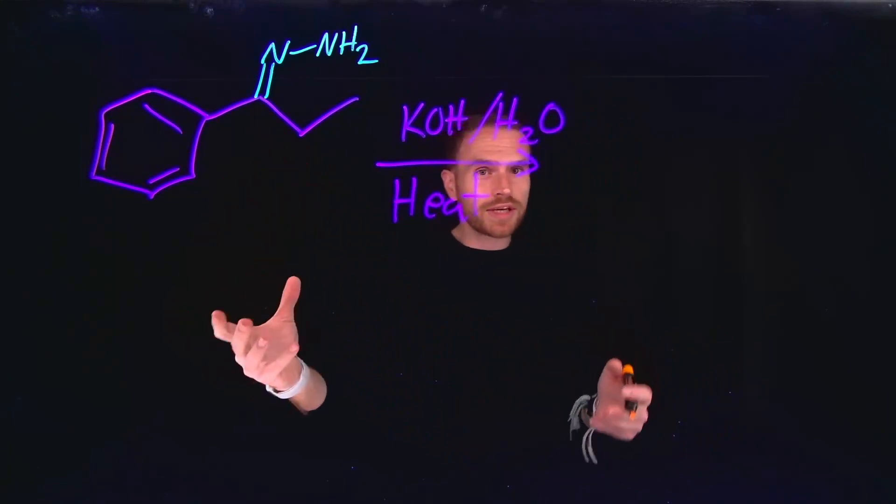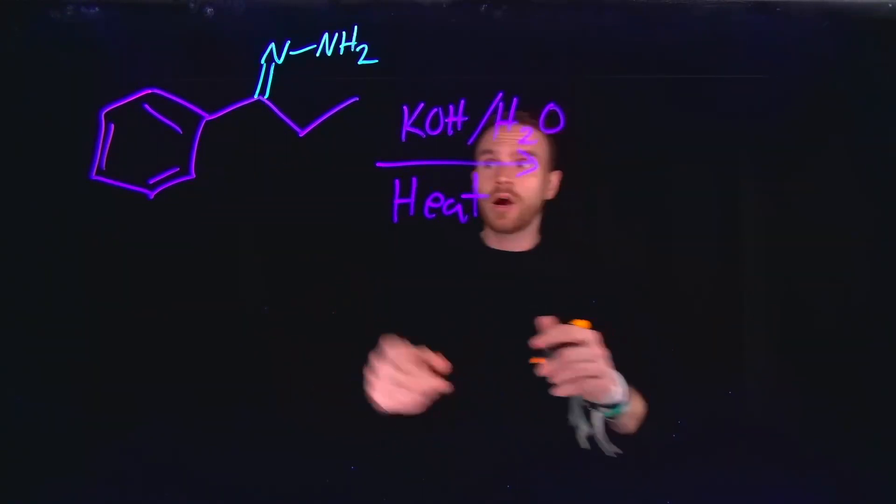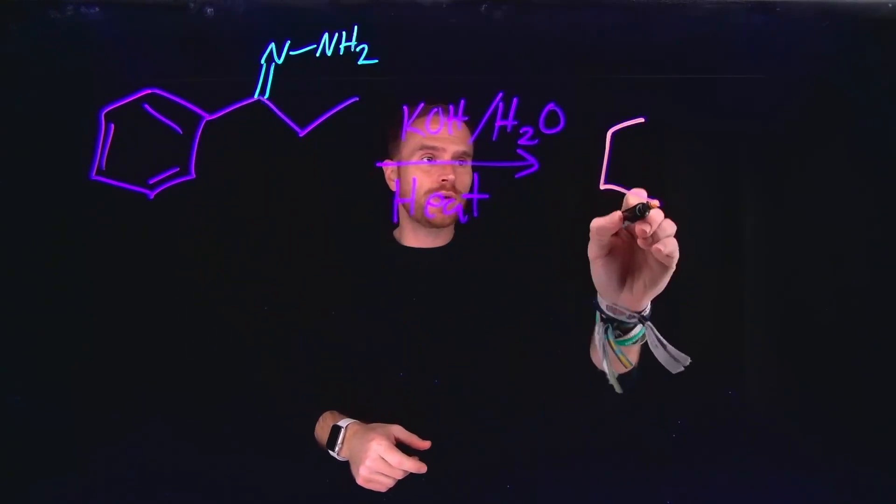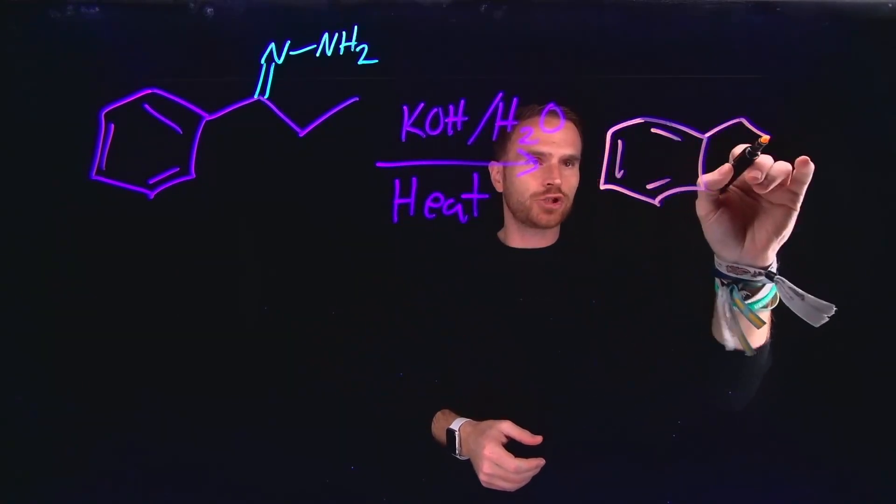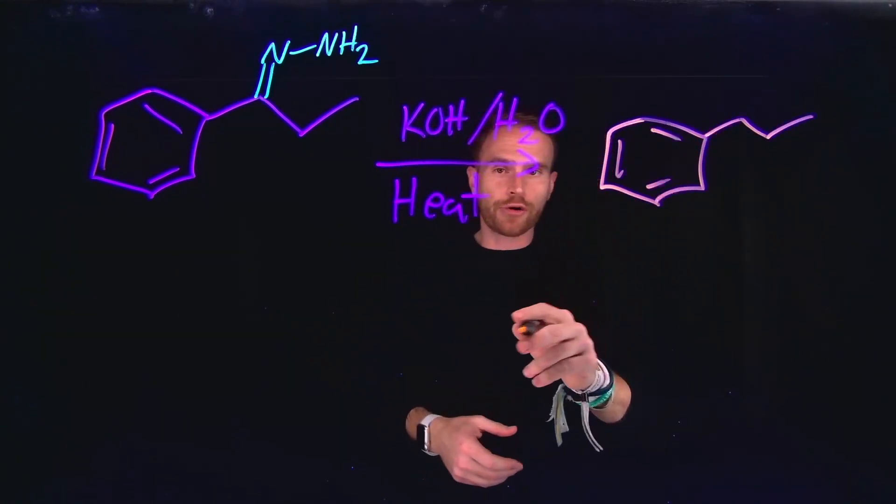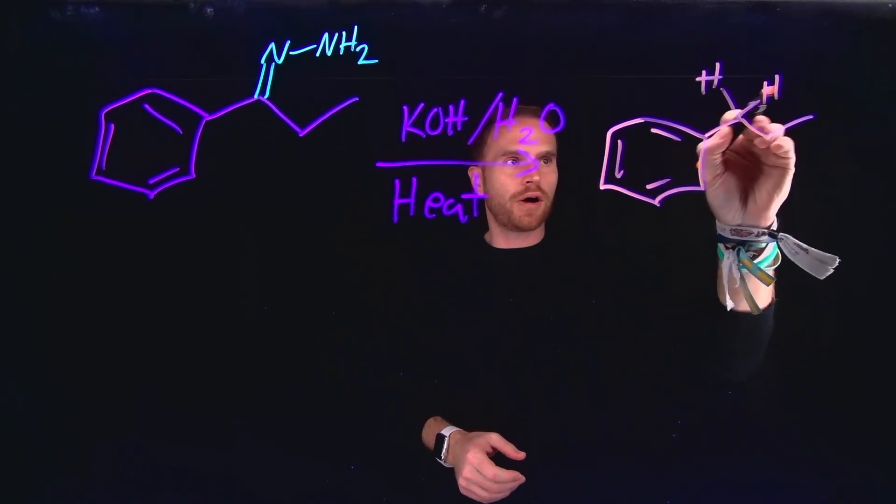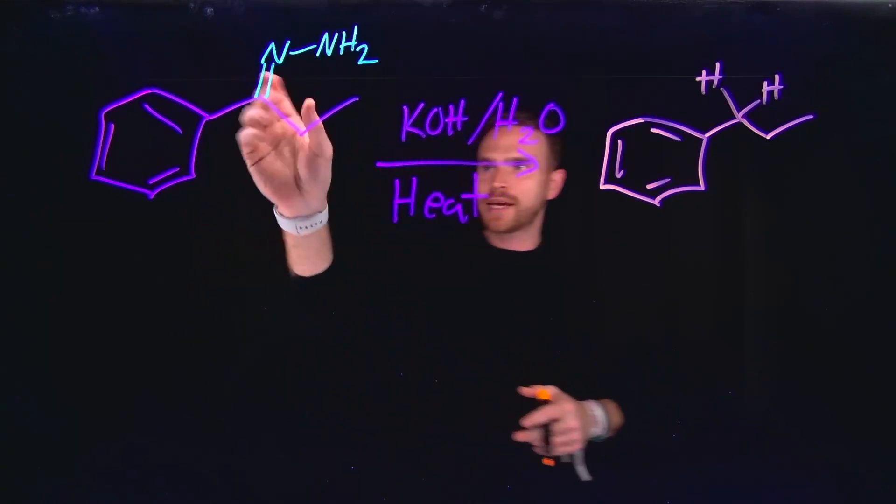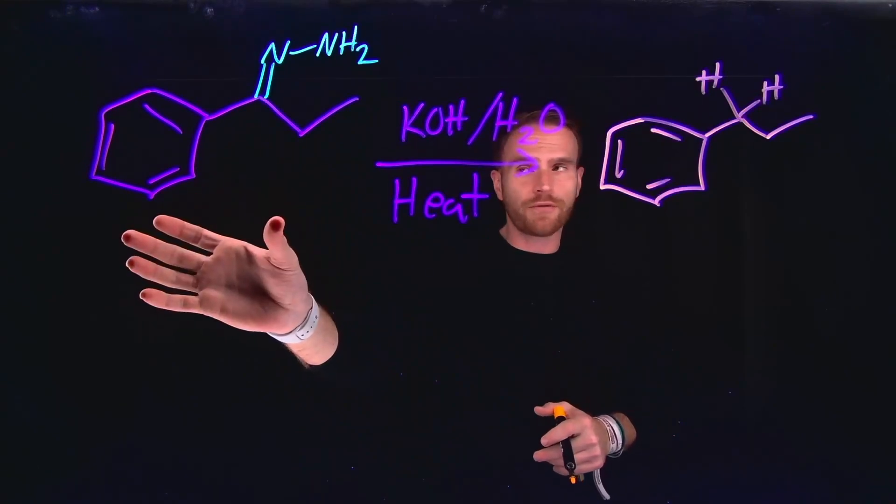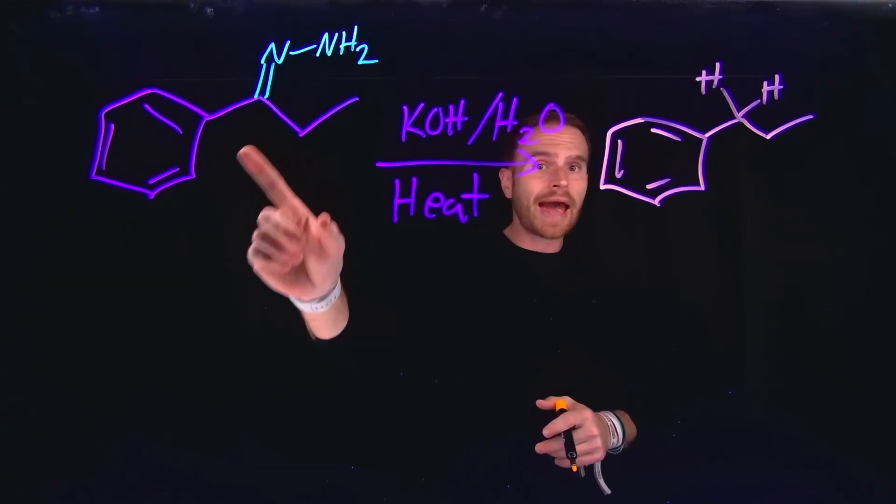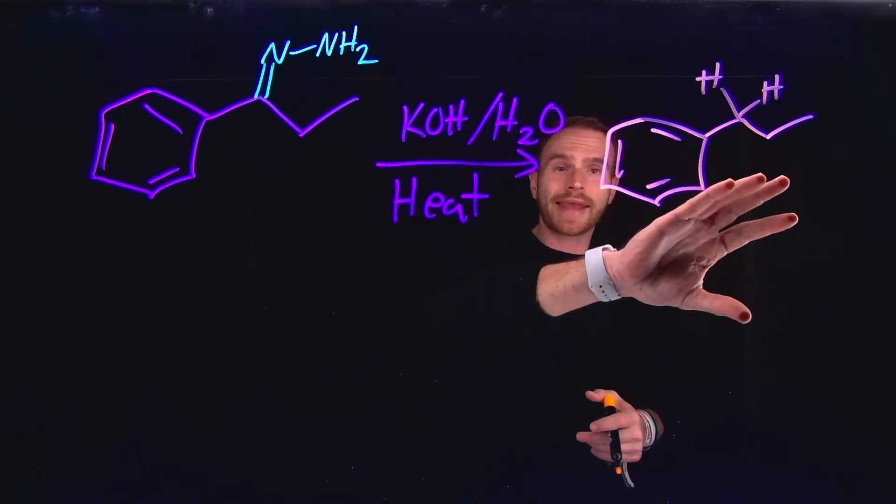That production of hydrazones is really important because it allows us to do what is known as the Wolf-Kishner reduction, where we can actually turn a hydrazone into an alkane chain. So by adding a strong base like potassium hydroxide in the presence of water and adding a lot of heat, what we can actually form is two new hydrogen bonds. So this means that we can actually turn carbonyl functional groups because now we know that we can turn carbonyl functional groups into hydrazones and then subsequently reduce them using what's called the Wolf-Kishner reduction to generate an alkane chain.